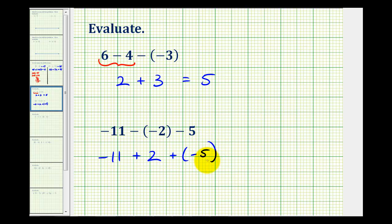Now we'll work our way from left to right applying the rules for adding integers. So for negative eleven plus two, we're adding integers with different signs and we can see that the negative eleven is going to outweigh the positive two, so the result is negative nine.